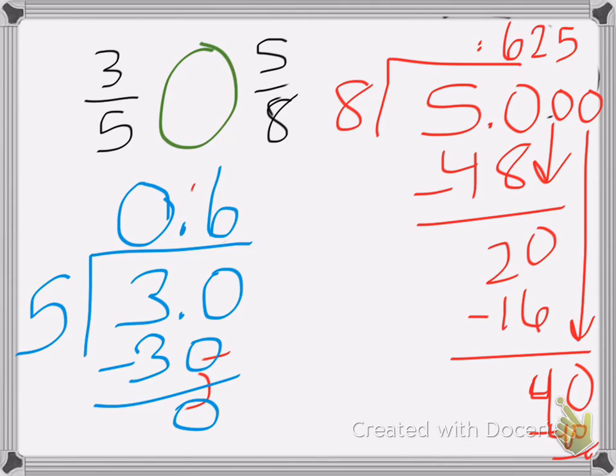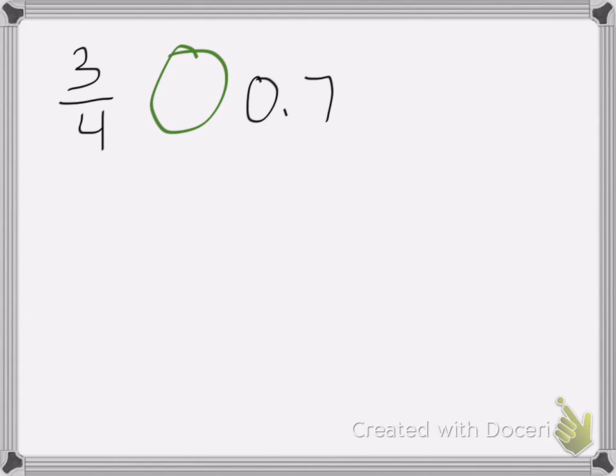So I know that 5 eighths is greater than 3 fifths. Now here I have 3 fourths and 0.7. So I already have 1 as a decimal, so I'm going to change 3 fourths into a decimal number as well.